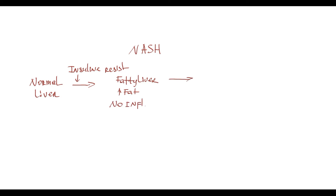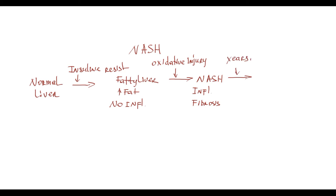At some critical point of fat accumulation, oxidative injury develops. With oxidative injury, there are areas of inflammation in liver tissue, and inflammation is usually accompanied by fibrosis — a condition called non-alcoholic steatohepatitis. If inflammation with fibrosis persists through years, this eventually results in cirrhosis development. So cirrhosis is the final and most severe stage in this sequence of non-alcoholic steatohepatitis pathogenesis steps.